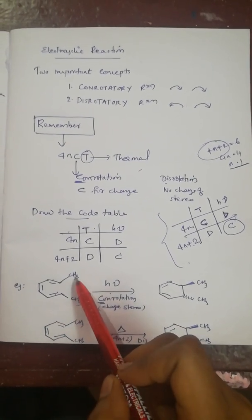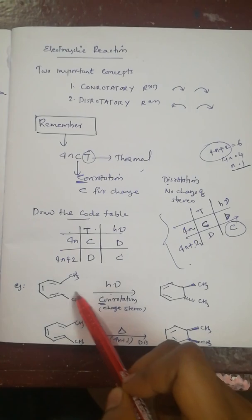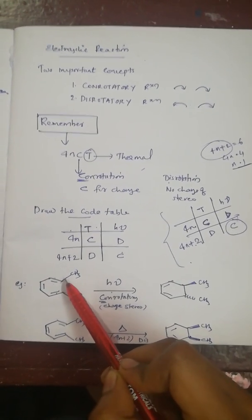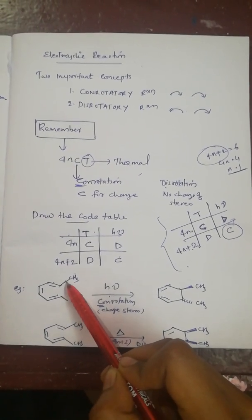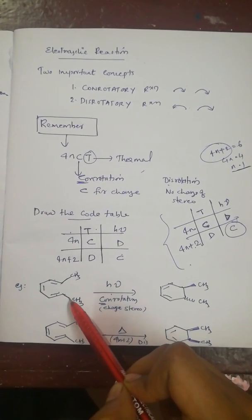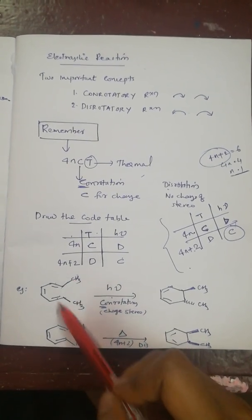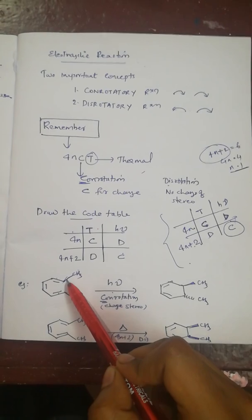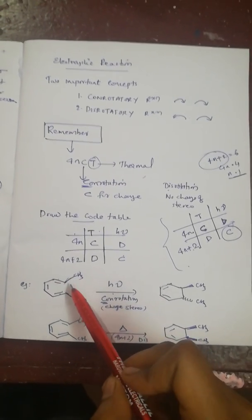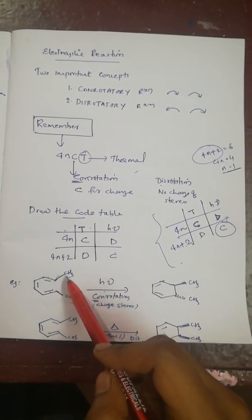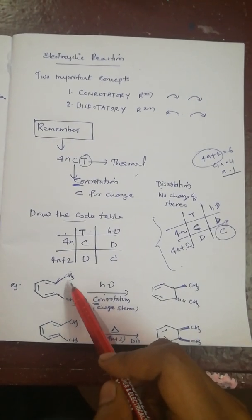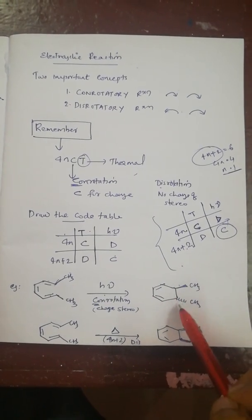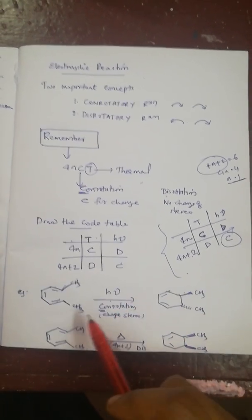The important concept here is to look at the stereo of the methyl groups — their orientation with respect to the ring. Here, this methyl is away from the ring and this one is also away from the ring, so they are in the same stereo orientation. Since C means 'change', in the product both should be in opposite directions — one up and one down. So the answer is up-down.